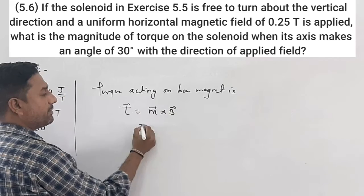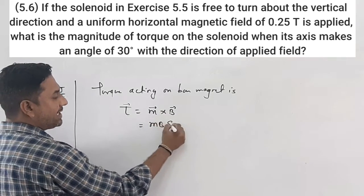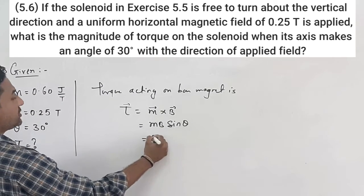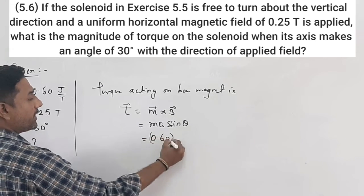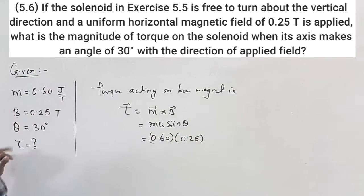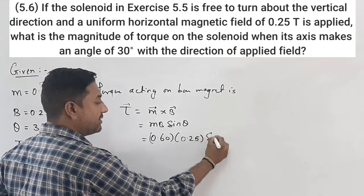The formula is mb sin theta. Let's substitute the values here. m is 0.60 into B which is 0.25 and sin theta, that is sin 30.